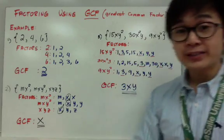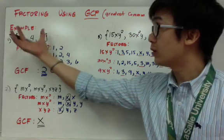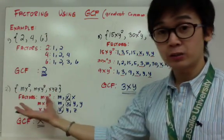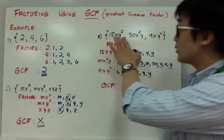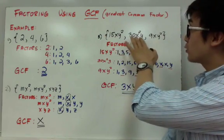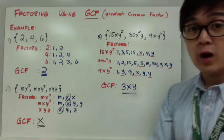Now in my third example, I'm going to combine real numbers and variables together to form these terms. So now I have 15xy squared, 30x squared y, and 9xy squared.